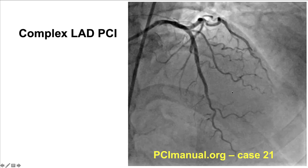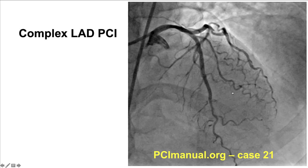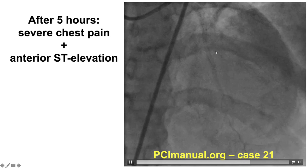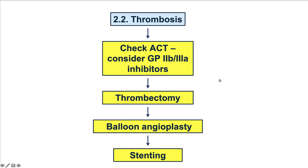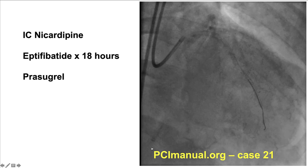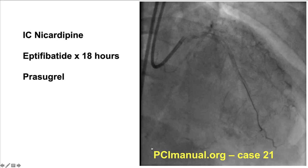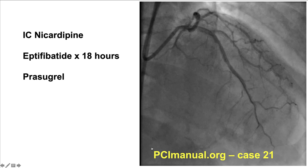This is an example of a patient who underwent complex PCI of the LAD and then a few hours later developed acute stent thrombosis. How to deal with stent thrombosis? The first step is to check the ACT, perform thrombectomy especially if there is large thrombus burden, then balloon angioplasty and stenting. In this particular case, aspiration thrombectomy was performed, the patient was given eptifibatide, intravascular imaging was performed ensuring good stent expansion, and then the patient was maintained on prasugrel afterwards.